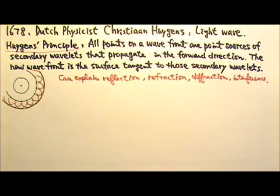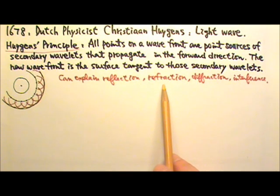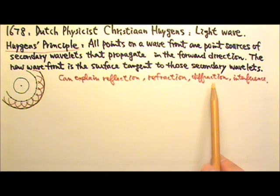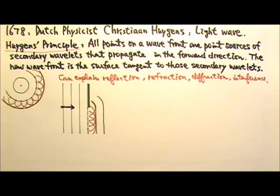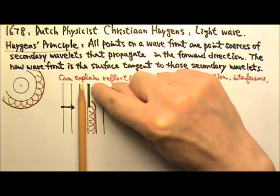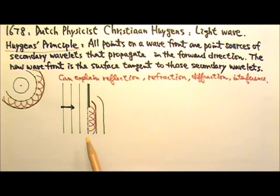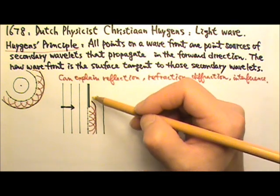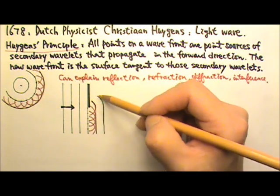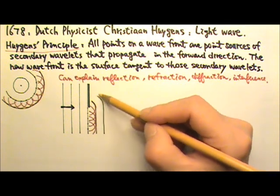Huygens' principle can successfully explain the laws of reflection and refraction, and it is particularly useful for understanding diffraction and interference. For example, when this plane wave traveling to the right hits this obstacle, we can say that every point on this wavefront is a new wave source. So the wavelets travel forward, and that's why we end up with a wave that can reach behind the obstacle.